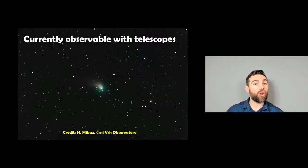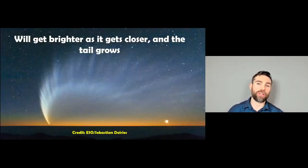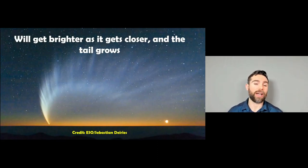So at the moment, it's currently observable with telescopes. So if you've got a small telescope or even a big telescope, then you can see it. But as it gets closer and closer to the sun and to the Earth, it's going to get brighter and it'll be easier to spot. So as it gets closer, then yes, this tail is going to get much bigger and it's going to get much brighter. So we should, hopefully, by the end of January into early February, potentially be able to see this without a telescope in the sky. And it will be fairly easy to find as well.